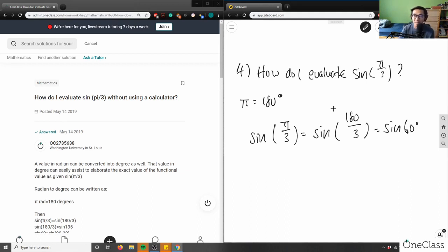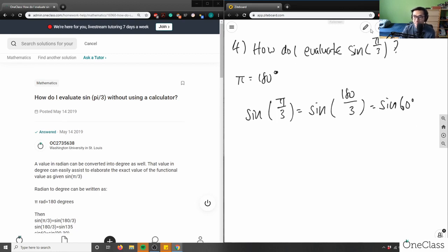So if we have sine 60, this is testing us the knowledge of our special triangles, right? So if you remember from our special triangles, what this would give us would be, we would have to draw a triangle that looks something like this. We have to draw a right triangle.